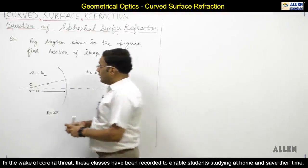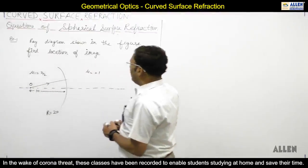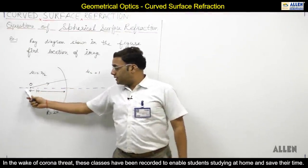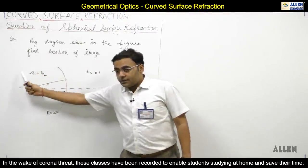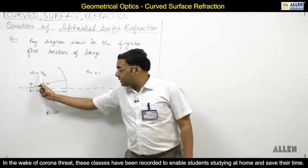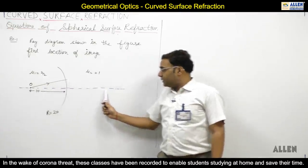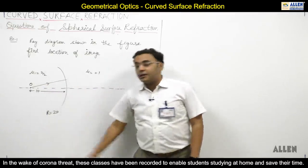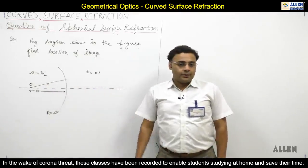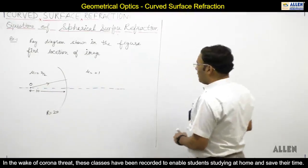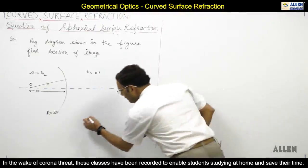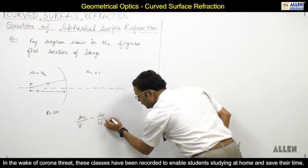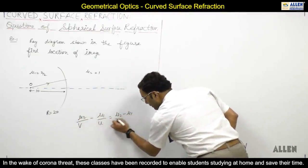Now we are taking one example using this formula. The question asks: given the ray diagram shown in the figure, find the location of the image. The object is in medium μ1 = 3/2. The refracted ray goes into medium μ2 = 1. The radius of the curved surface R is given as 20, and the object distance U = -10.